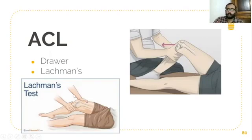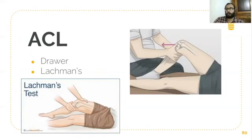The next clinical examination test is Lachman's test, in which the same maneuver is performed but at a different angle. In the drawer's test the knee is flexed to 90 degrees, while in Lachman's test the knee is flexed to only 20 to 30 degrees.